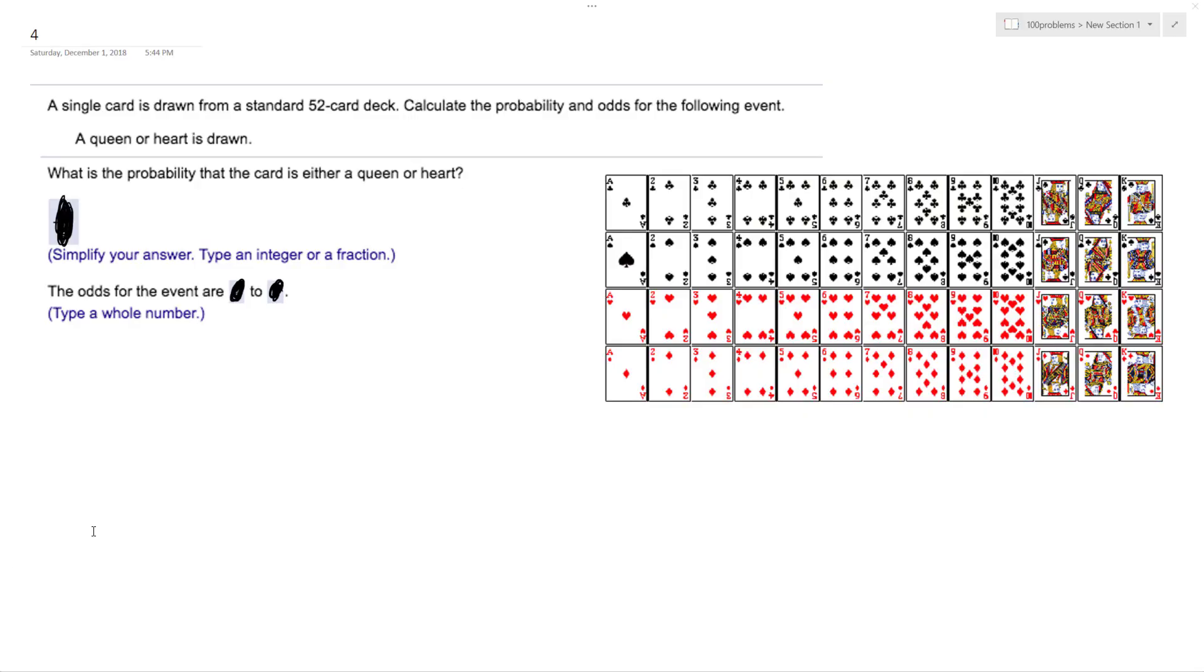We want to find the probability of a card either being a queen or a heart. So if we look here, our queens are right here, so there's four of them, and then our hearts are all right here, so there's 13 of them. There's an intersection, so there's a queen that's a heart.